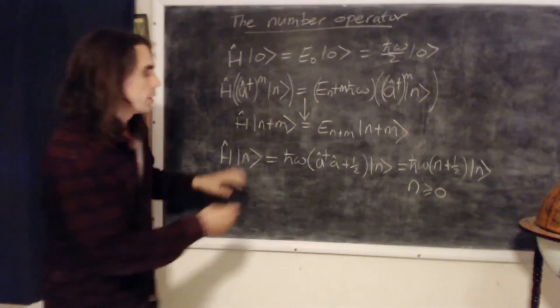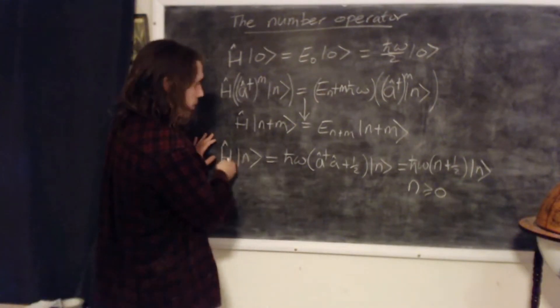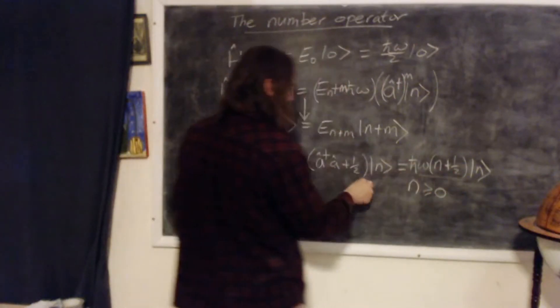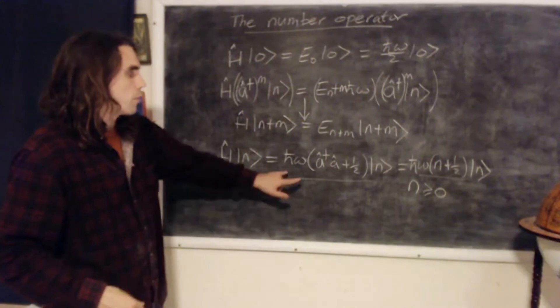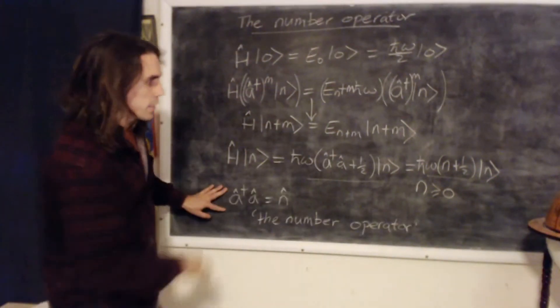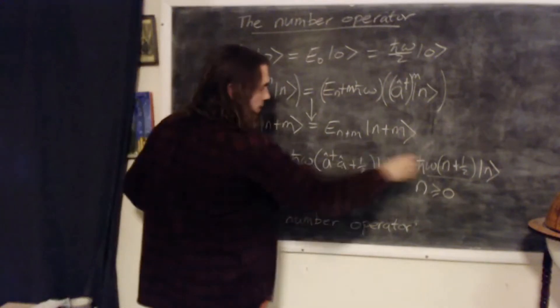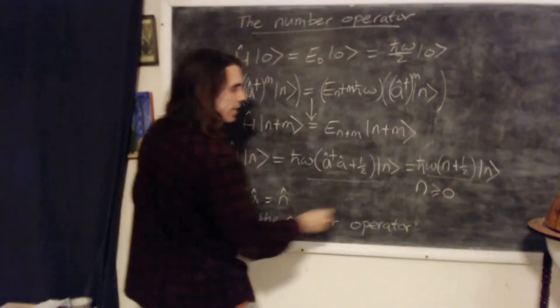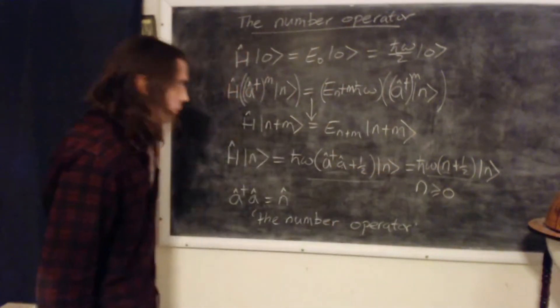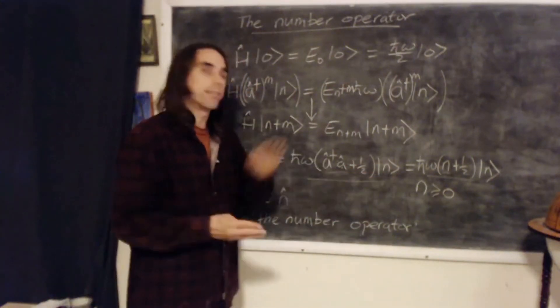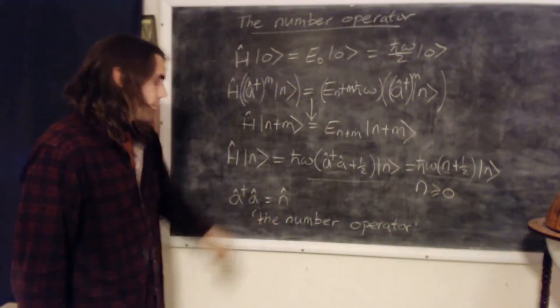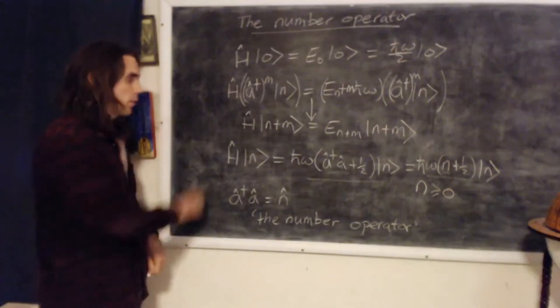So what this is telling us if we look at it, so this is a Hamiltonian, this is a Hamiltonian rewritten, and this is an energy eigenvalue. So actually there's a simpler operator that we can define here. You see that the only difference in these two equations is that this operator a dagger a has returned this integer n when acted on the state n, which is the state corresponding to the nth energy eigenstate. And so we define a dagger a to be this operator n, the number operator, whose defining equation is this.